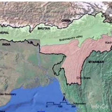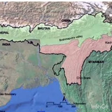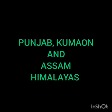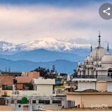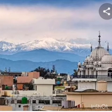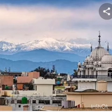The Himalayas are also divided on the basis of regions from west to east. This demarcation is done by river valleys like the Indus, Satlaj, Kali, Tista, and Dhyan rivers. The part lying between Indus and Satlaj is traditionally known as Punjab Himalayas, also originally known as Kashmir and Himachal Himalayas. The part between Satlaj and Kali rivers is known as Kumaon Himalayas. Between Kali and Tista rivers lies Nepal Himalayas, and the part between Tista and Dhyan rivers is known as Assam Himalayas.